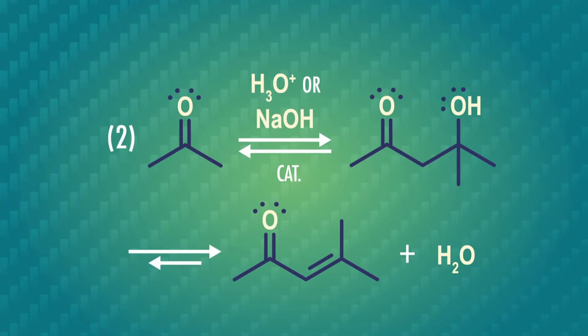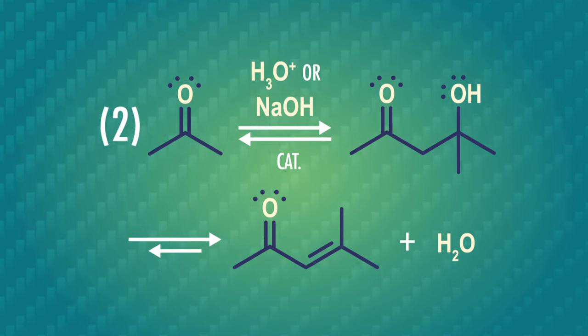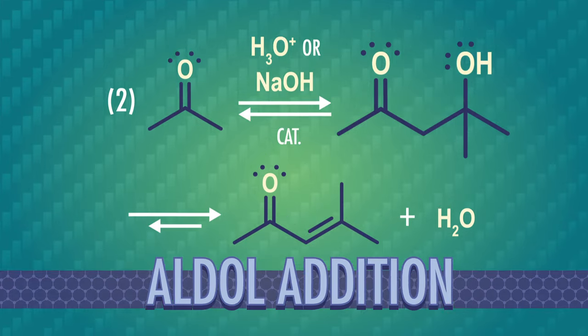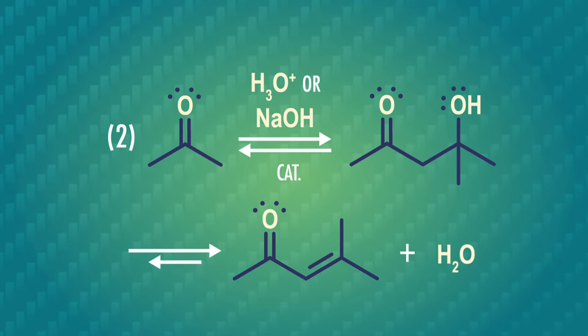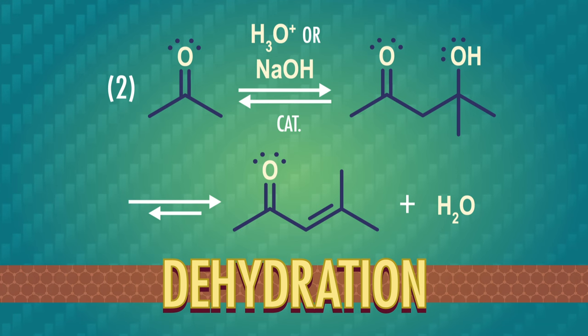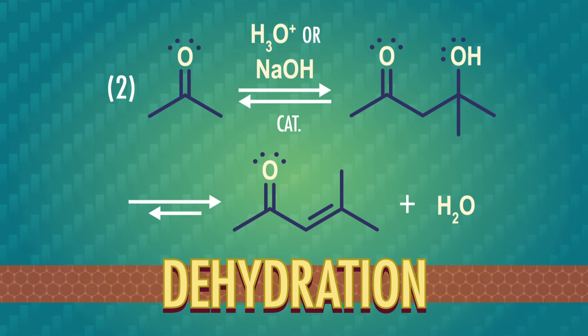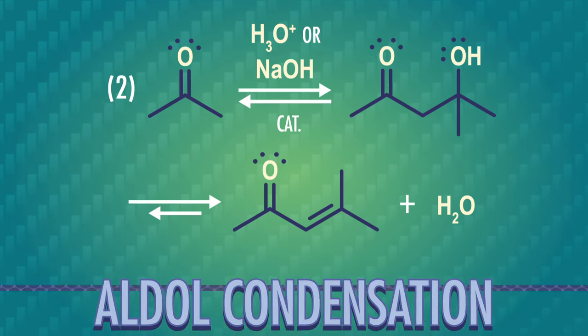The enol or enolate attacks another aldehyde or ketone in an aldol addition step. And then, to finish it off, water is removed in a step called dehydration. The overall process of two carbonyls coming together with loss of water is called aldol condensation. In this episode, we're only going to join two identical aldehydes or ketones. It's possible to join two different carbonyl molecules, but we're saving that for next time. With that being said, let's take a look at some simple examples.